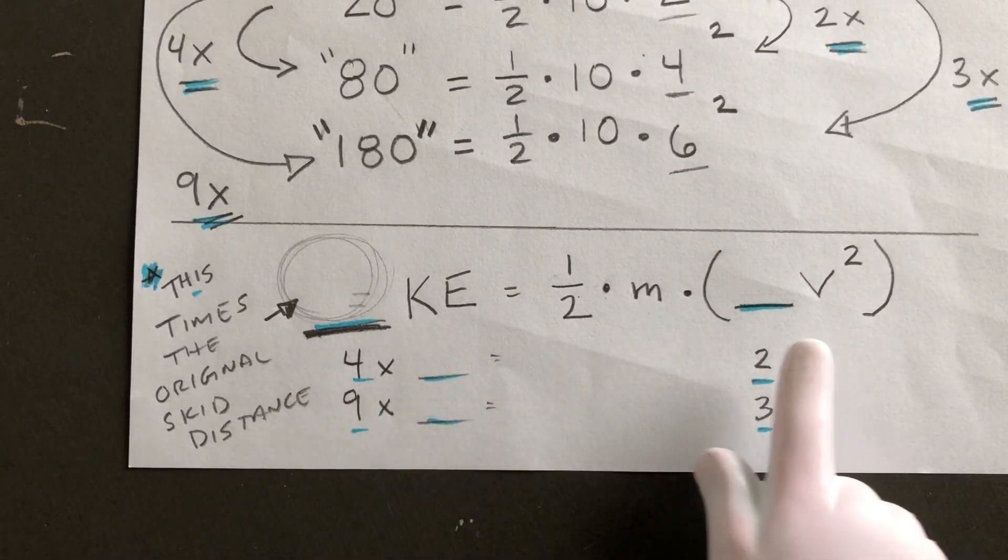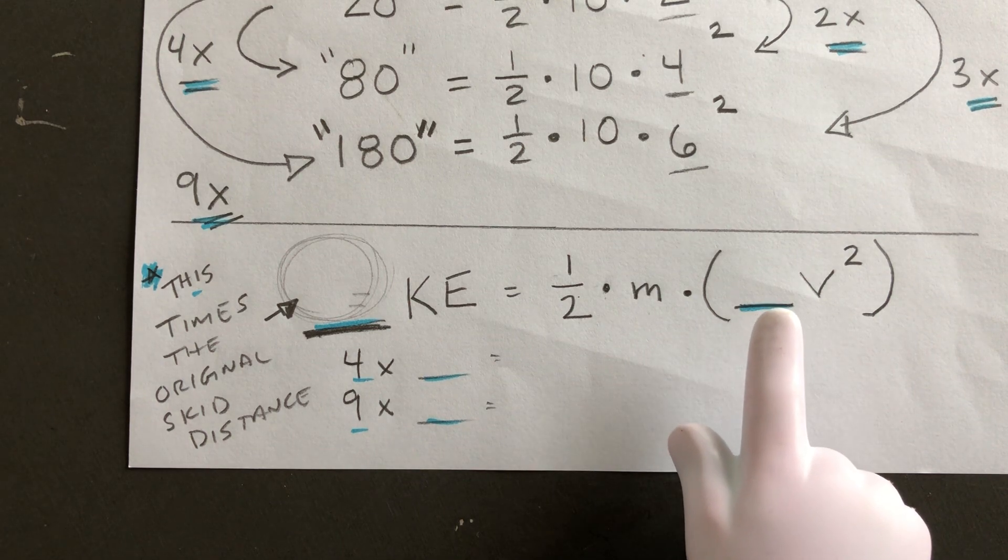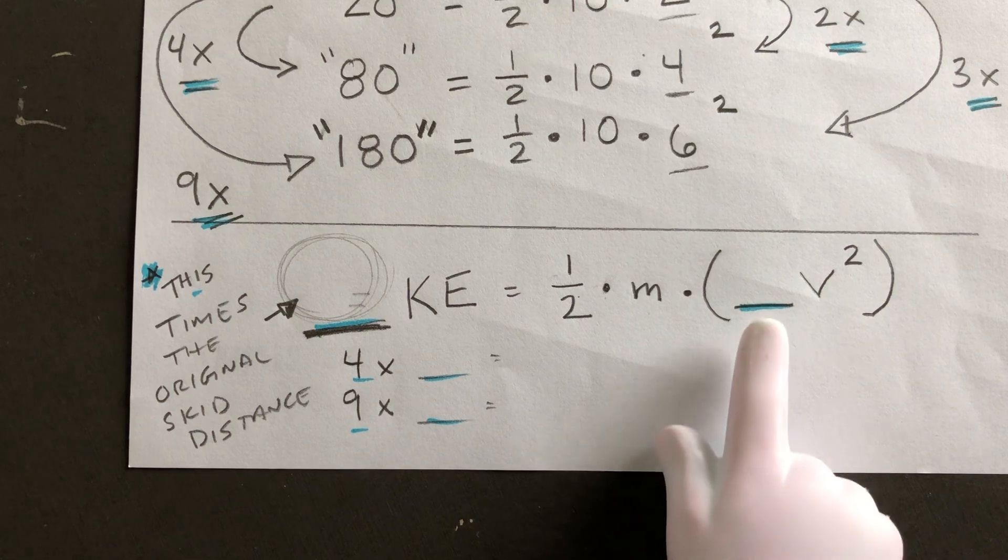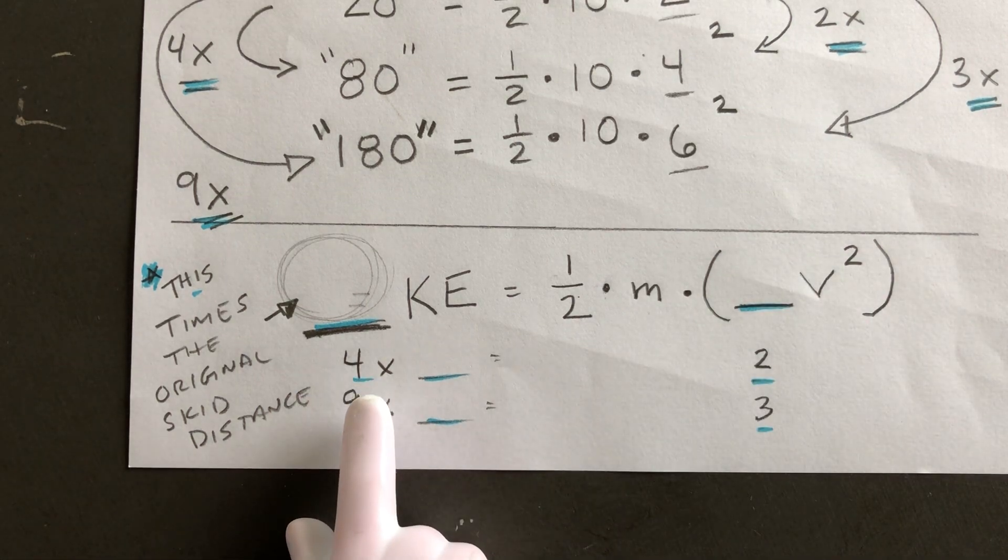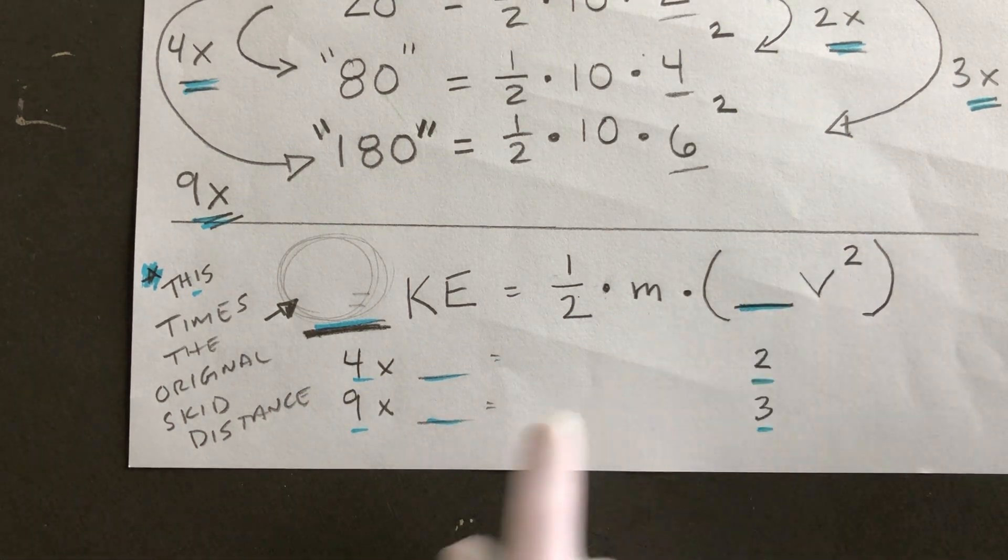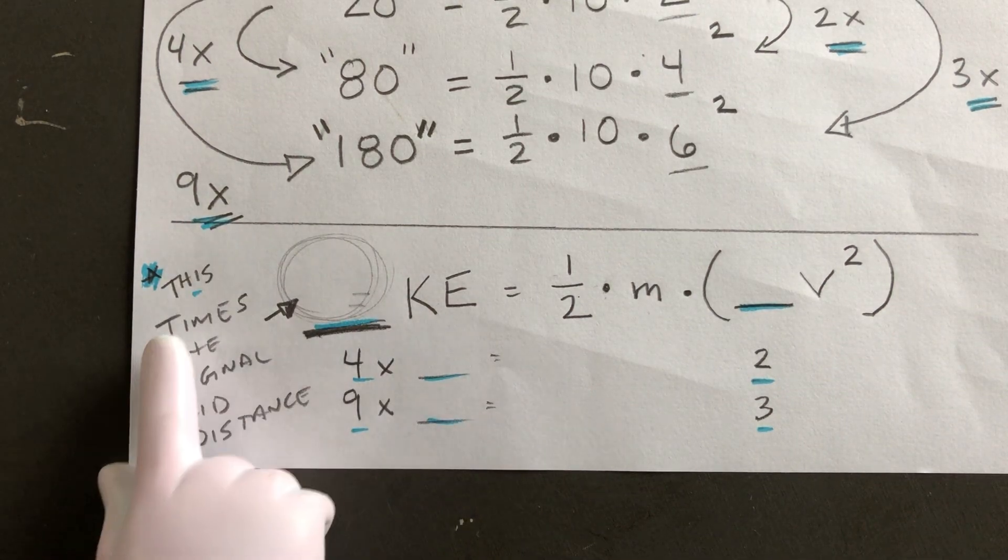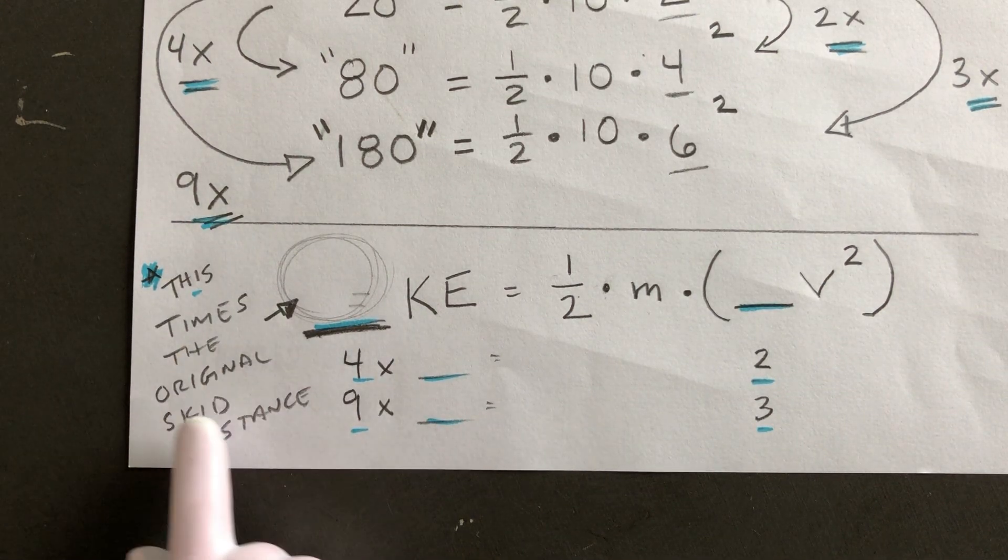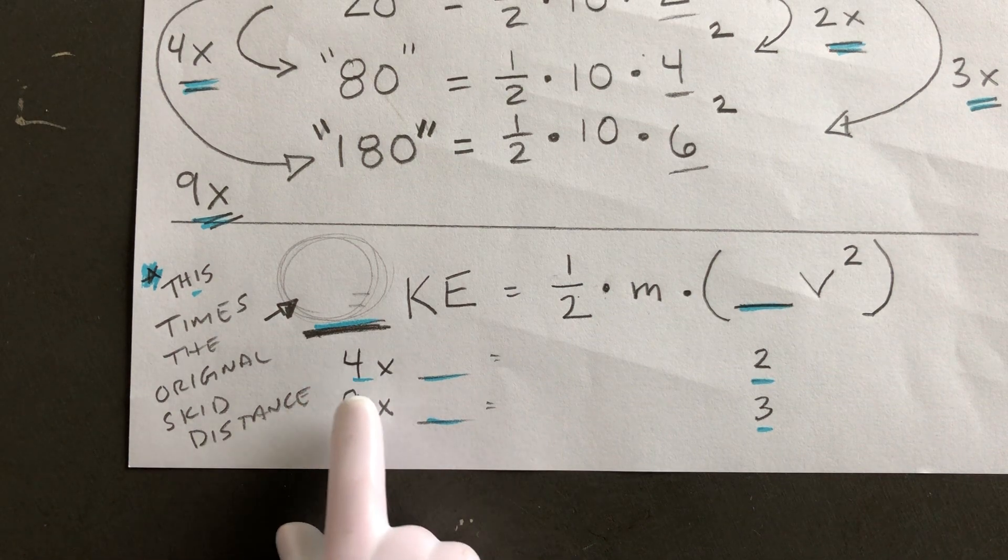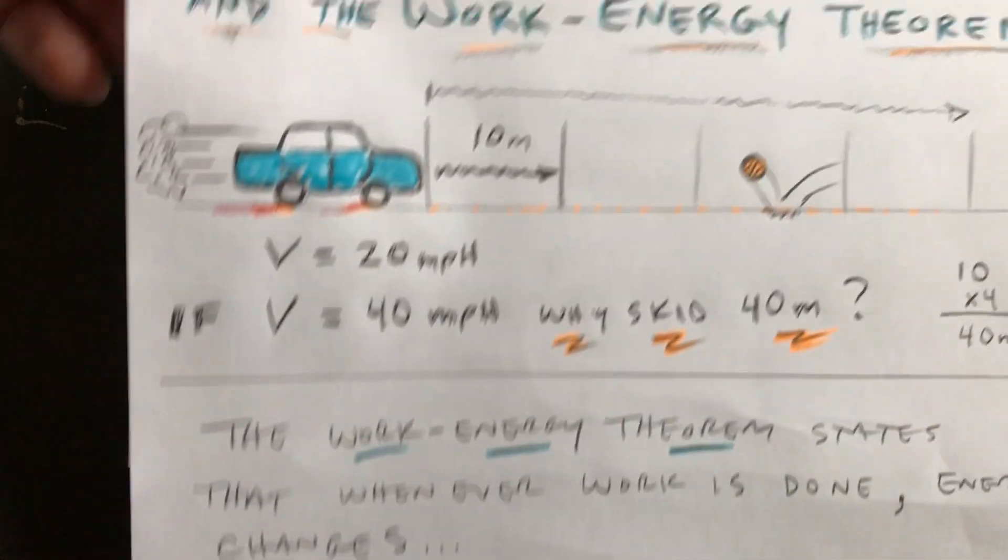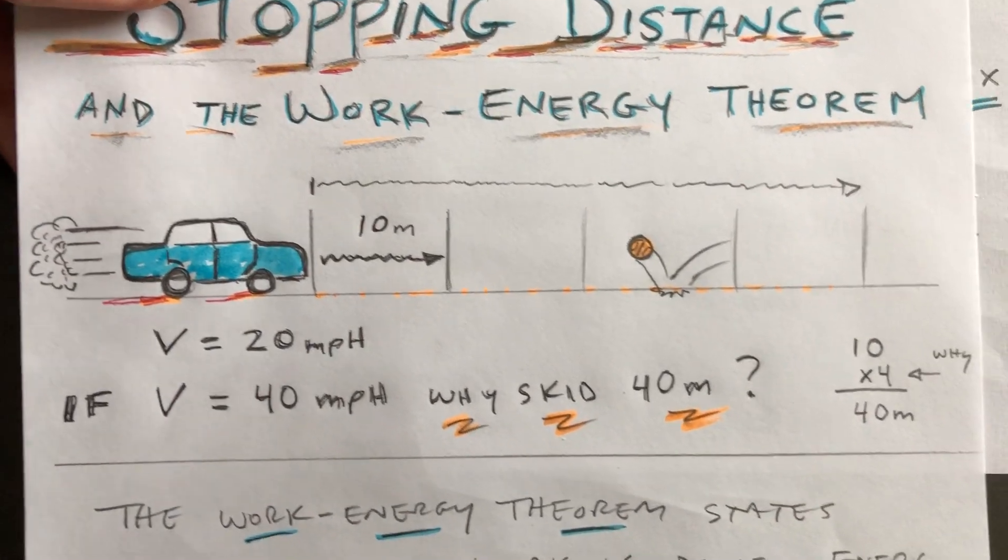Just use the kinetic energy formula like this, and whatever the velocity is or whatever the original value is, if you double it, then it's two times two, four times as much. Three times three, nine times as much. So basically this times the original skidding distance. Going back to our original problem of our skidding distance problem...